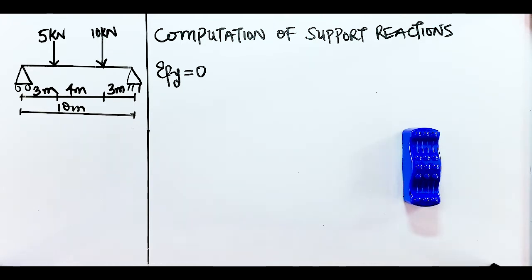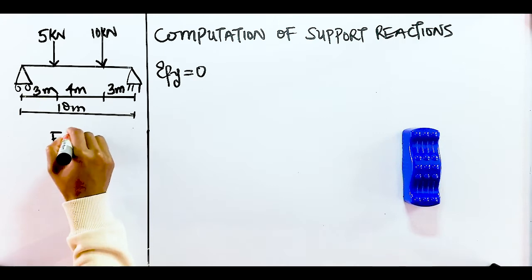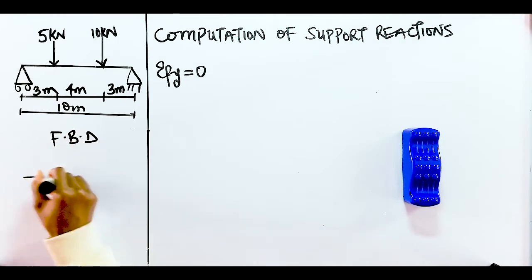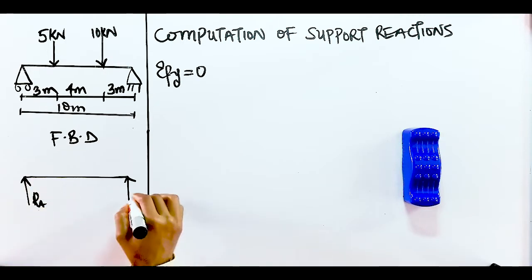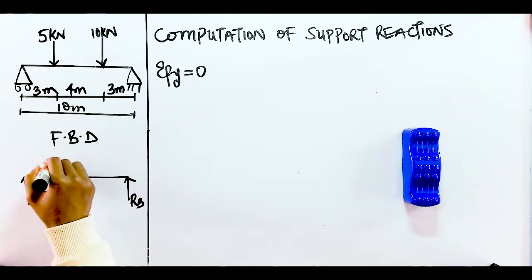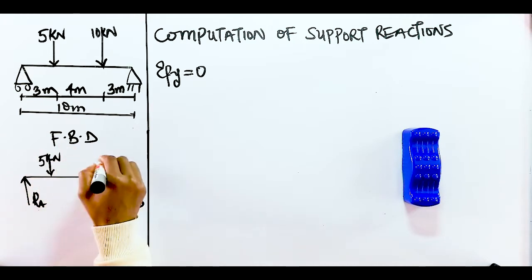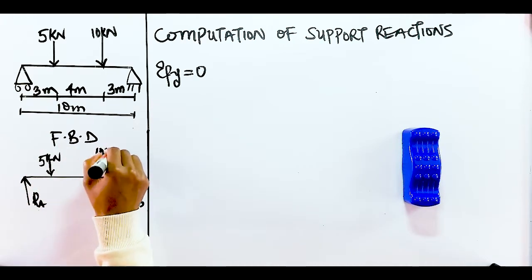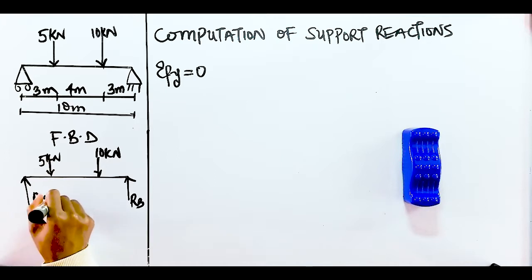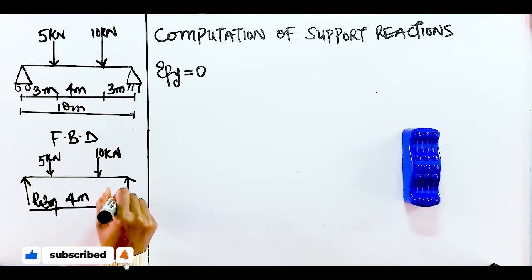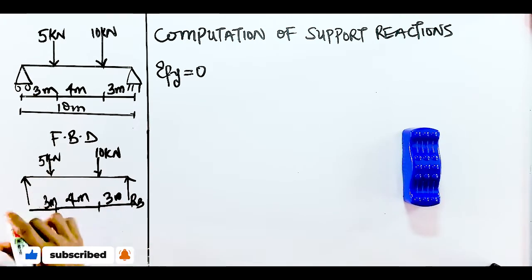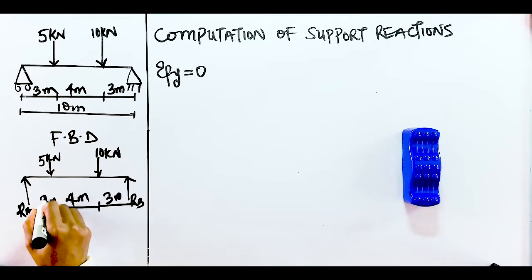The beam has a total span of ten meters. The first step is to draw a free body diagram — you have your straight line beam, your supports RA and RB, then your 5 kilo Newton point load and your 10 kilo Newton point load. The span is divided into three meters, four meters, and three meters.